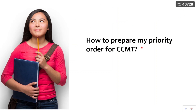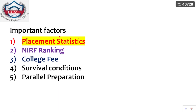How to prepare your priority order for CCMT? There are a lot of factors which influence the priority order, and it varies from person to person. The important factors are: first, placement statistics; second, NIRF ranking; third, college fee; fourth, survival conditions; and fifth, parallel preparation. You can also identify additional factors beyond these.